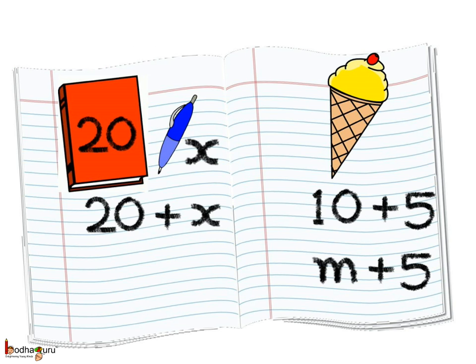For example, Anand bought a notebook costing rupees 20 and a pen. If we denote the price of pen by the variable x, then we can say the sum of two prices is equal to 20 plus x. This is just like the sum of two numbers.